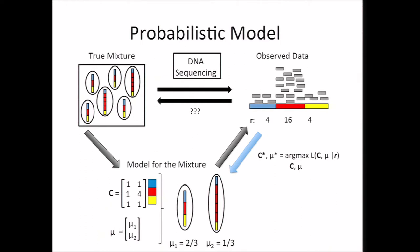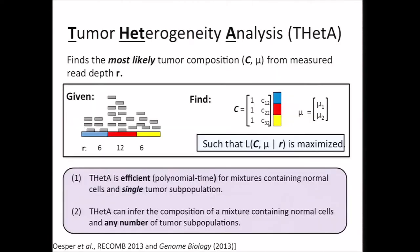We put this all together in our algorithm, which is called Tumor Heterogeneity Analysis, or THetA. THetA is a polynomial-time algorithm in the case when we consider a single tumor population and normal cells, and it can actually be extended to any number of different tumor populations. However, when you have multiple tumor populations, the runtime is exponential in the number of intervals in your partition.